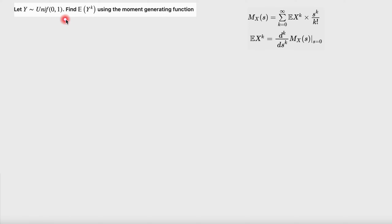Y follows a uniform distribution. Find the expected value of y to the power of k using the moment generating function. First, let's review some properties of a moment generating function.